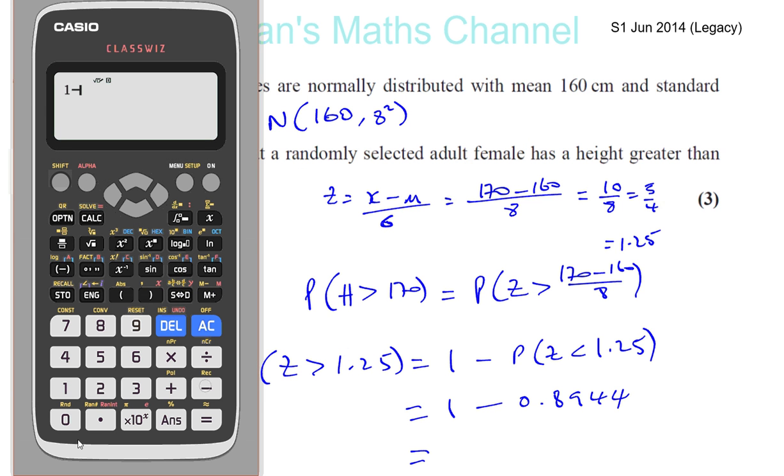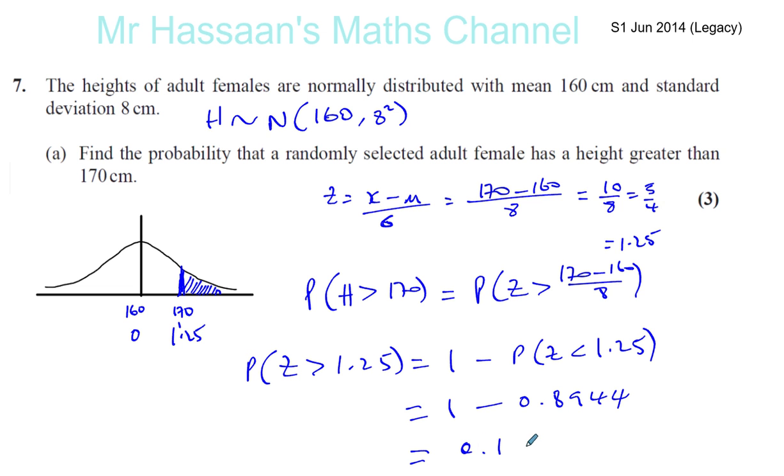Okay, 1 minus 0.8944. Let's make sure that's correct, yes. That gives you 0.1056. 0.1056.